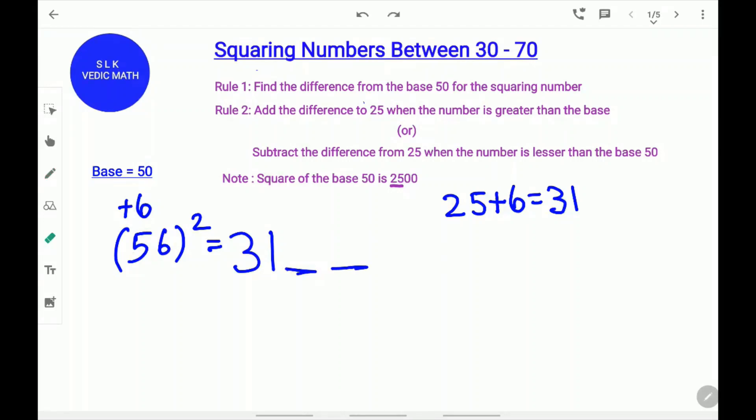To find the last two digits, square this number 6. 6 square is 36. Write 36 over here. So, the answer for 56 square is 3136.